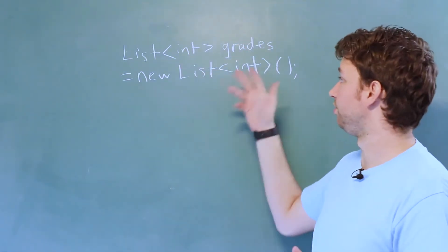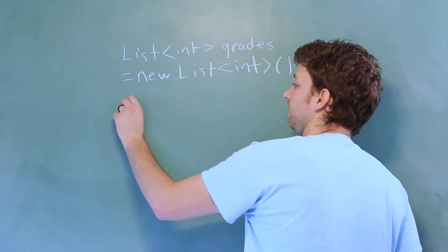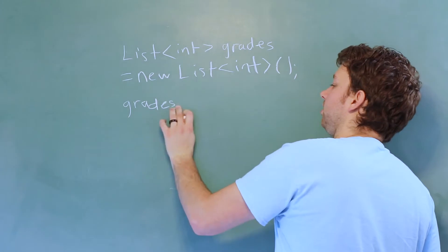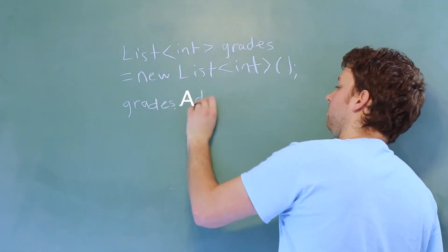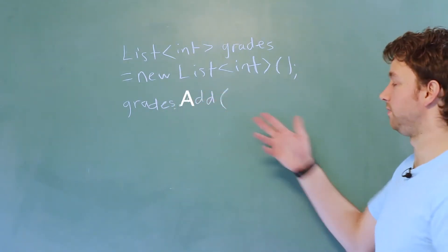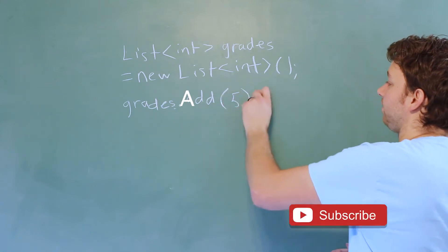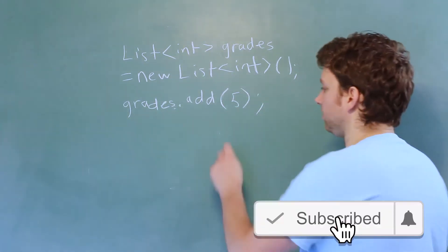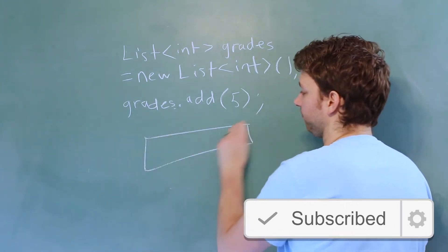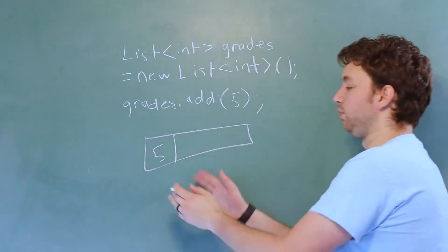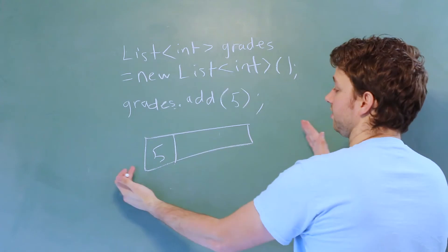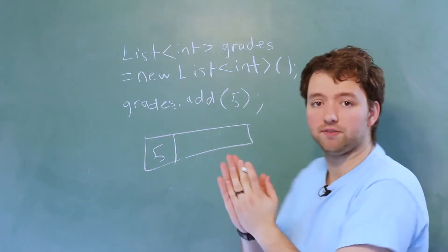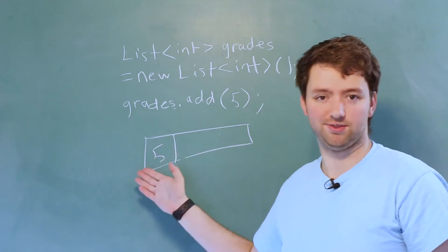We can just add elements into this list. To do that, all you do is use the identifier and then use a method called add. And the thing you want to add goes inside the parentheses such as the value five. That's going to put that into the first spot of the list. So it's going to look something like five. But we don't actually have to worry about the size here. It could be just one element. It could be more. All we have to worry about is that our element is in there.